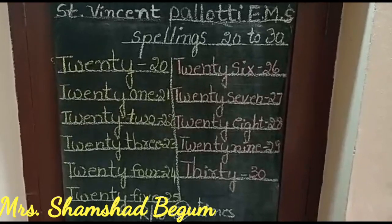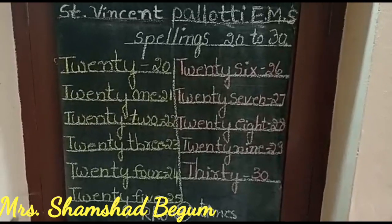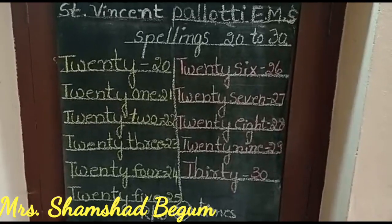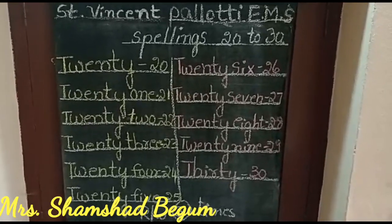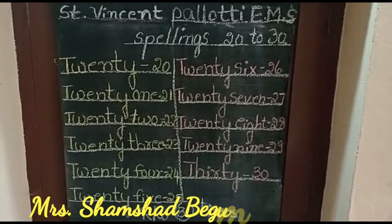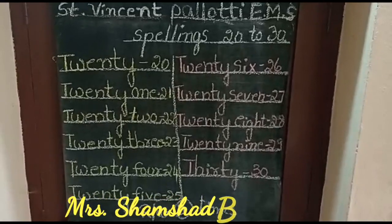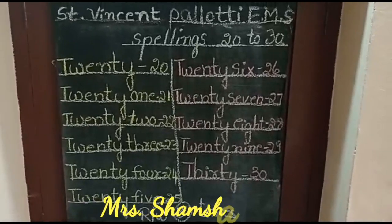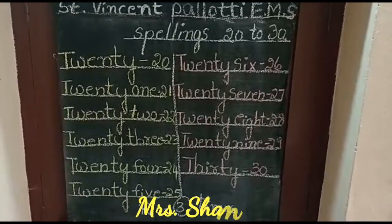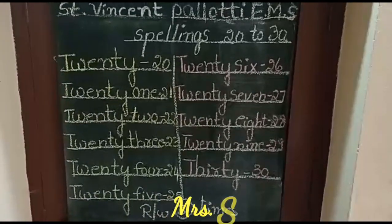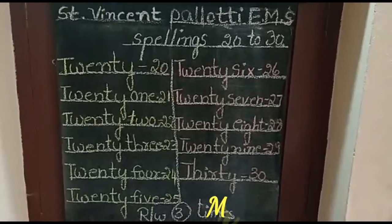Less than, greater than, big numbers and small numbers, additions, subtractions. So today I will give spellings 20 to 30.